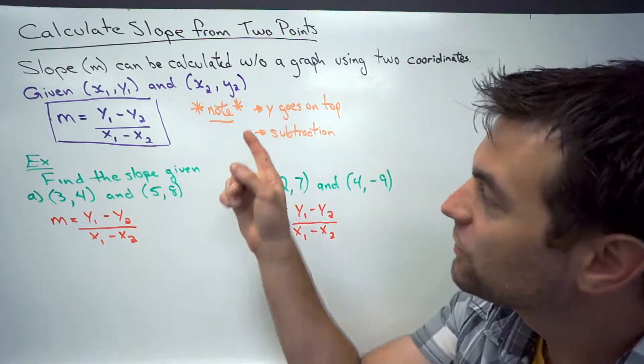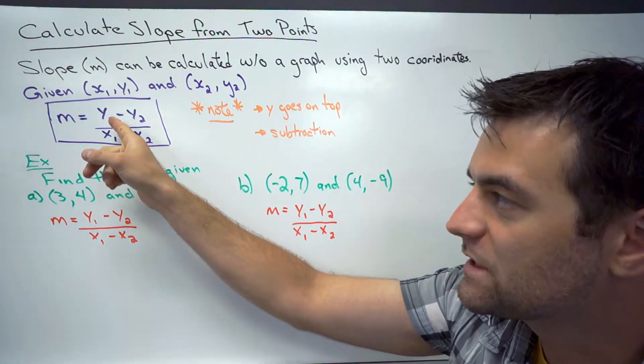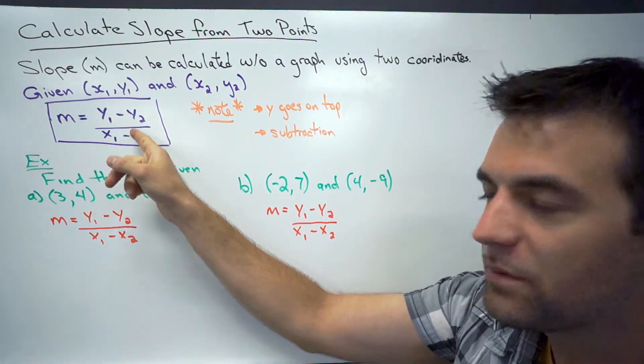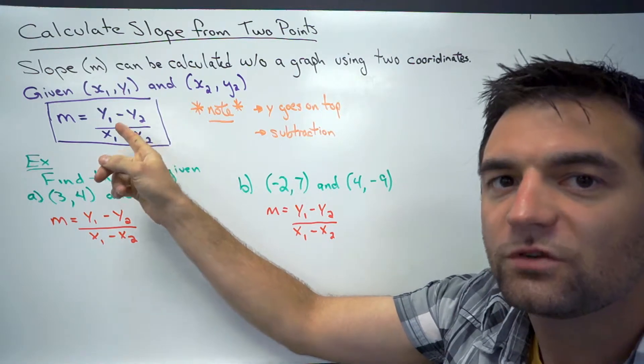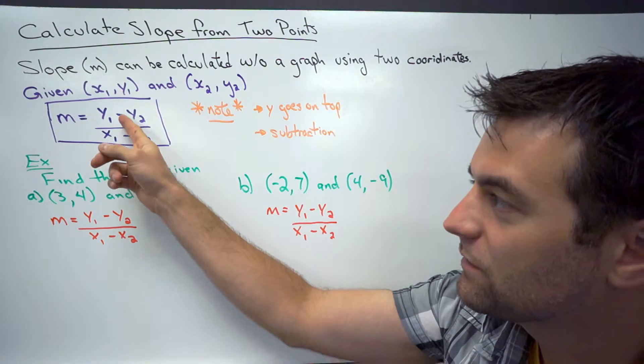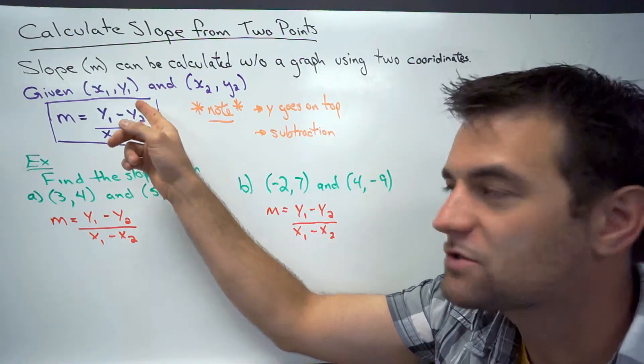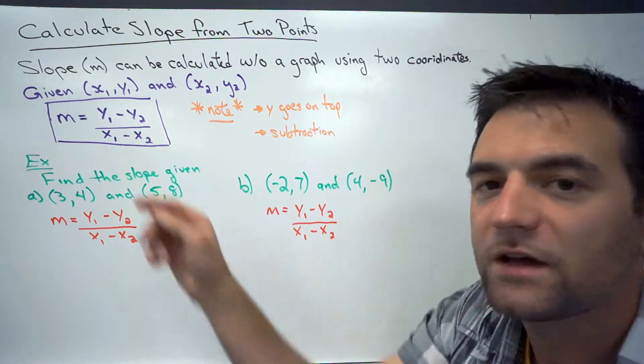Two things to note with this formula. First, the y goes on top. One of the common mistakes that people make is they put the x on top and the y on the bottom. The y goes on top, don't forget that. Secondly, subtraction. People mix up the signs and they put addition in there. This is a subtraction question, so we are subtracting y's from y's and x's from x's.